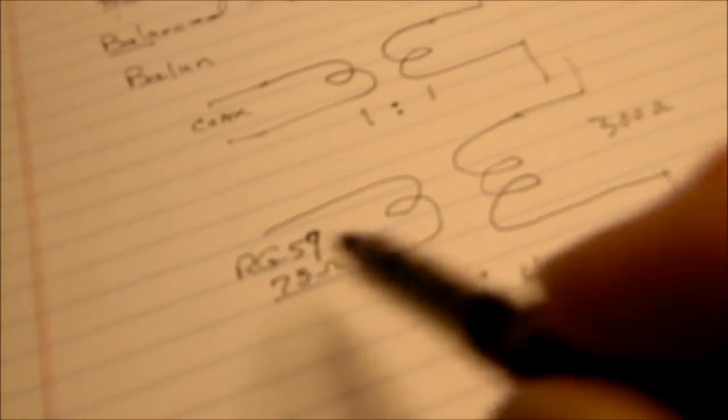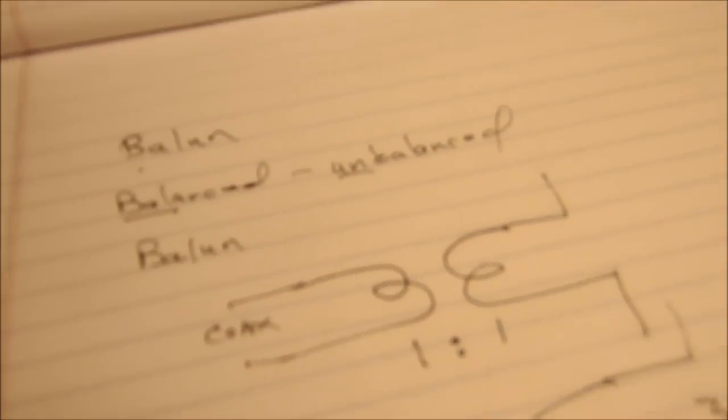So if you have 75 ohms here, you'd have 300 here. And a one-to-one, of course, is 50 to 50 or 75 to 75 or whatever.